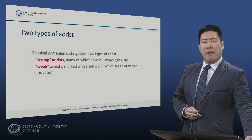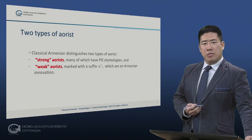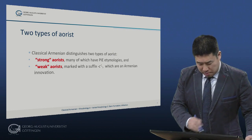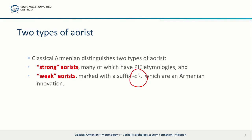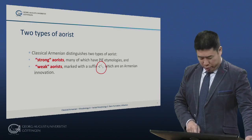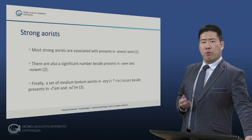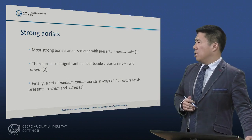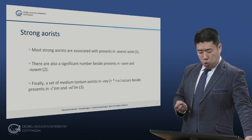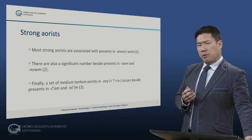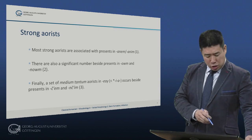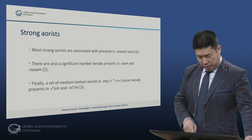There are two types of aorist in descriptions of classical Armenian grammar: strong aorists — many of which go all the way back to Proto-Indo-European — and so-called weak aorists, which are marked with a suffix 'tse' and are an Armenian innovation. So in almost all cases where you see an aorist stem ending in 'tse', you're dealing with a weak aorist. Most strong aorists are associated with presents in 'anem/anim' — that's the default, type one. There are also a significant number of strong aorists beside presents in 'um' or 'num' — type two. Finally, there is a set of deponent or medium-tantum aorists in 'ei', which occur beside presents in 'cem' or 'nchim' — type three.